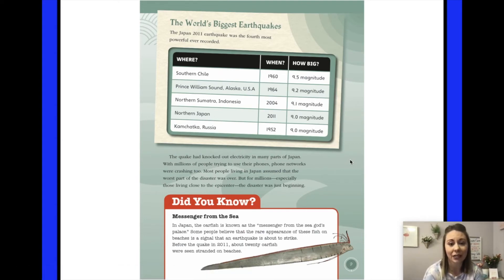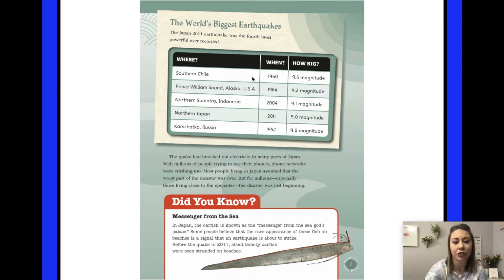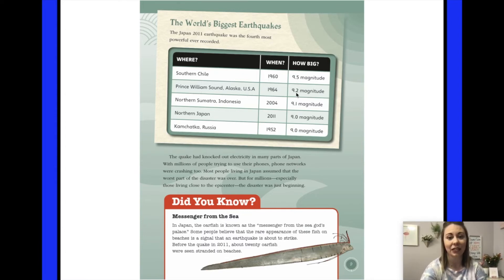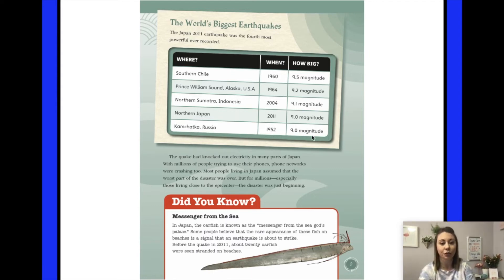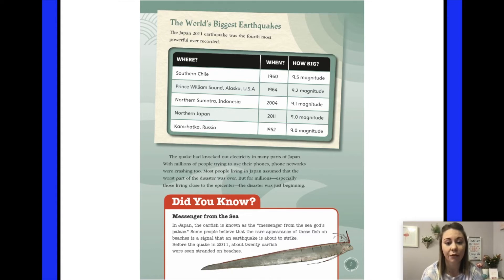The world's biggest earthquakes. The Japan 2011 earthquake was the fourth most powerful ever recorded. A table shows: southern Chile 1960 was a 9.5; Prince William Sound, Alaska, 1964, was a 9.2; northern Sumatra, Indonesia, 2004, was a 9.1; northern Japan 2011 — the one we're reading about — is 9.0; and Russia in 1952 was also a 9.0. The quake knocked out electricity in many parts of Japan, and with millions trying to use their phones, phone networks were crashing too. Most people assumed the worst was over — but for millions near the epicenter, the disaster was just beginning.